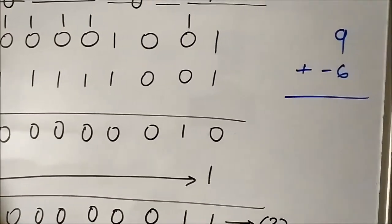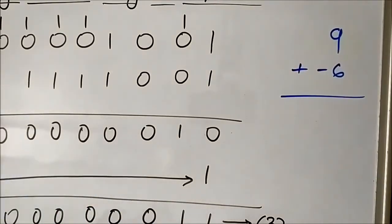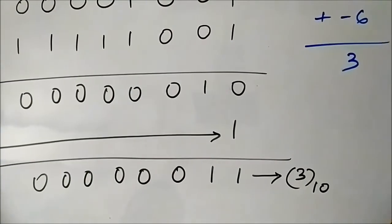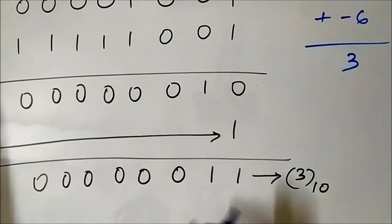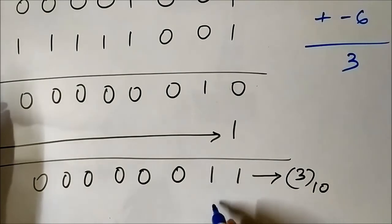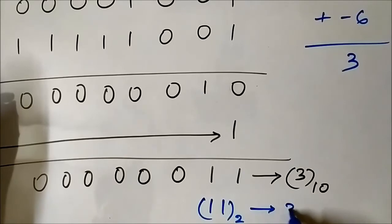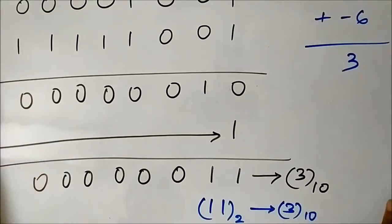Adding the end-around carry to the LSB gives the final result: 0 0 0 0 0 0 1 1, which is equivalent to 3 in decimal form. So 9 minus 6 equals 3, confirmed.